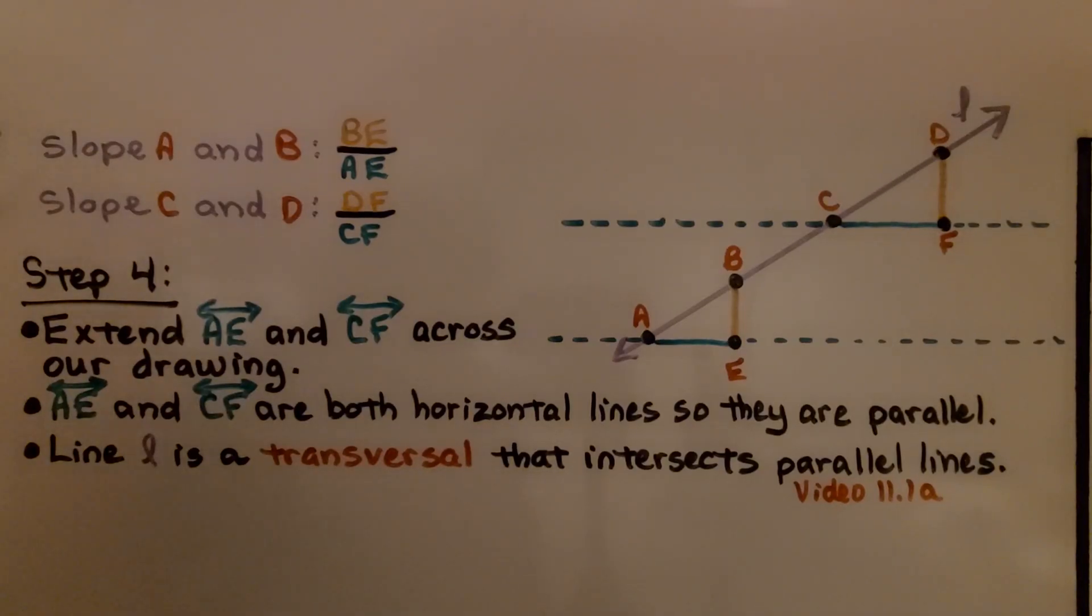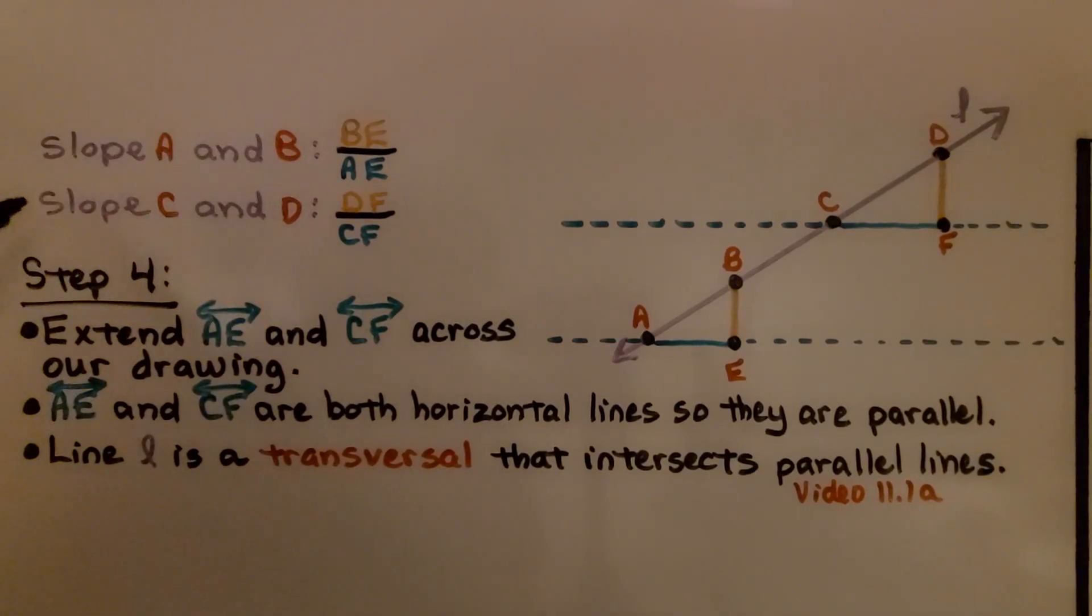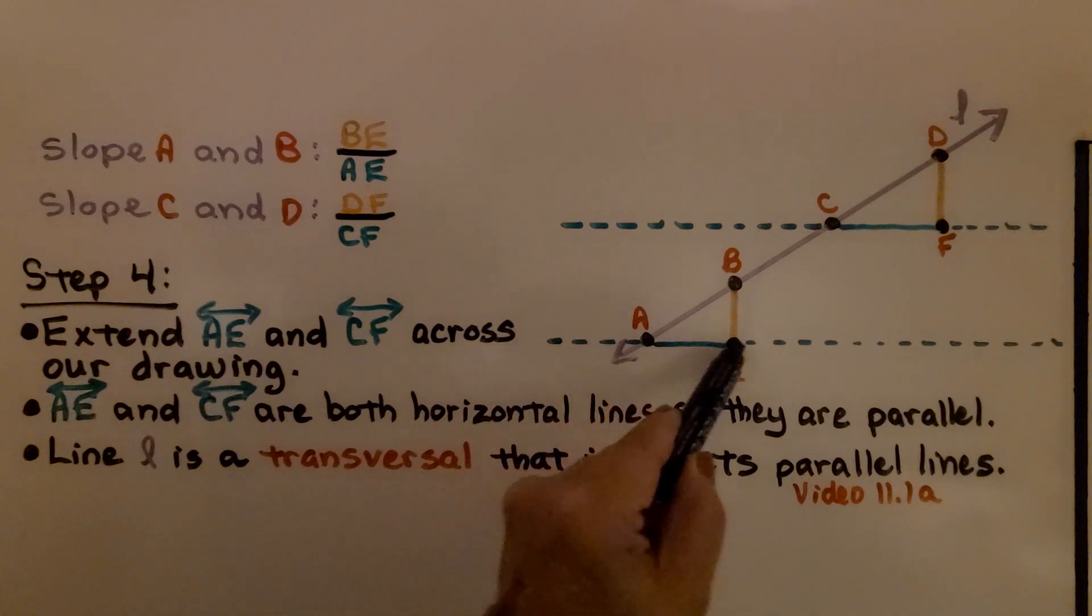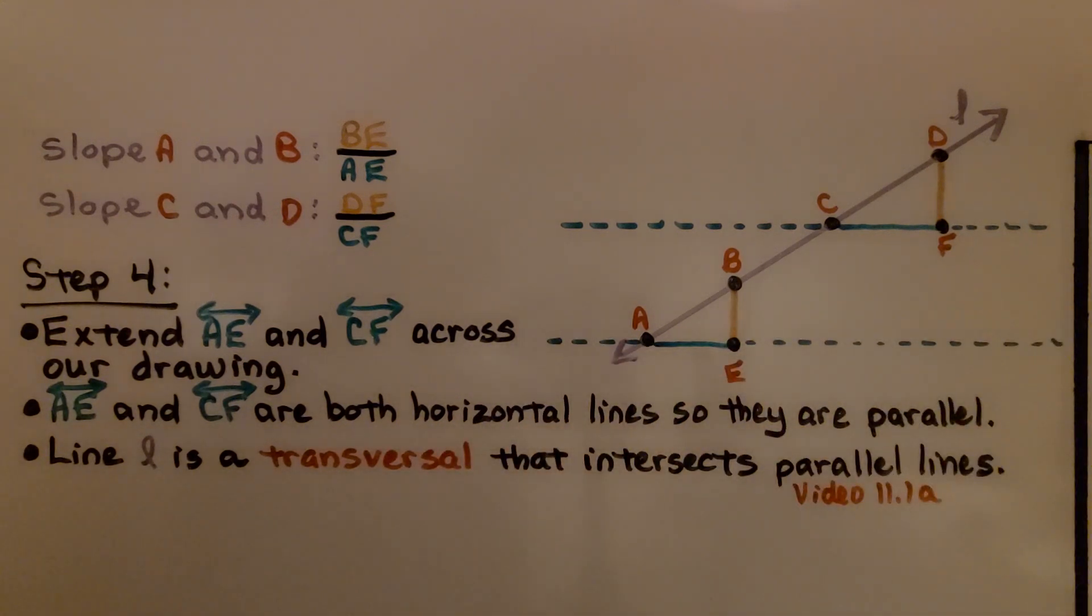Now we have the slope for A and B, and the slope for C and D. Step four, we extend line AE, so we're going to extend it all the way across horizontally, and CF.